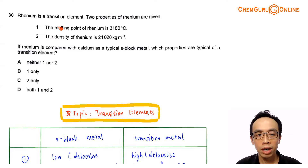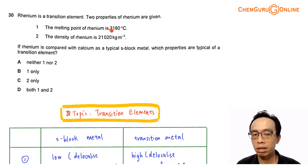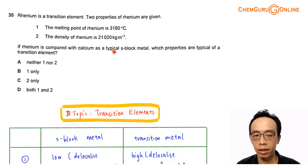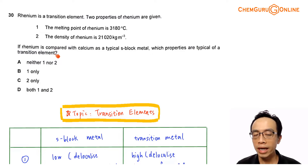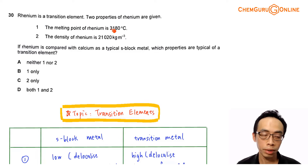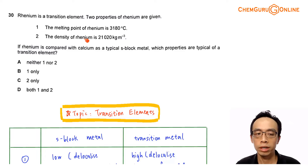Question 30: rhenium is a transition element. Two properties of rhenium are given. The melting point of rhenium is 3180 degrees Celsius. The density of rhenium is 21020 kg per meter cube. If rhenium is compared with calcium as a typical S-block metal, which properties are typical of a transition element?